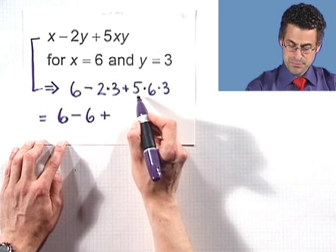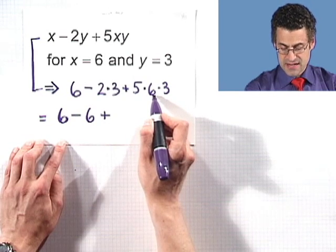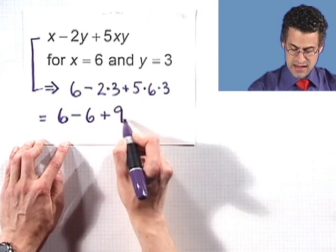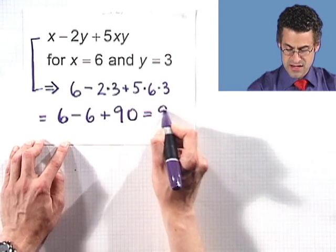And then plus, and then five times six, that's 30, times three is 90. And so this all reduces down to 90.